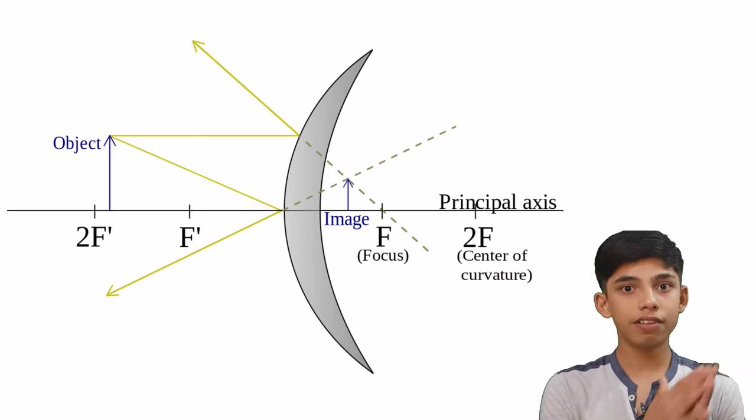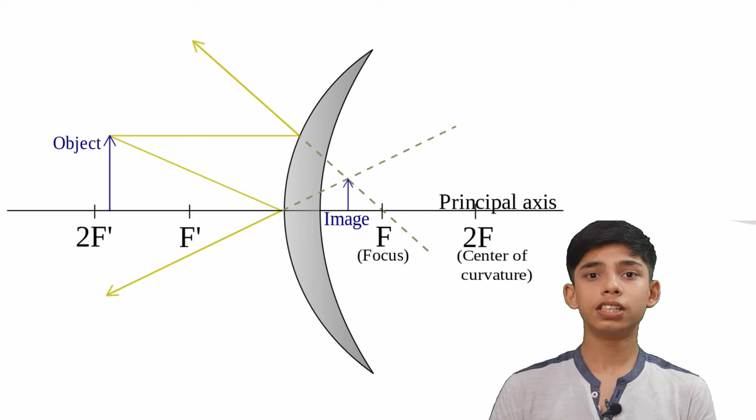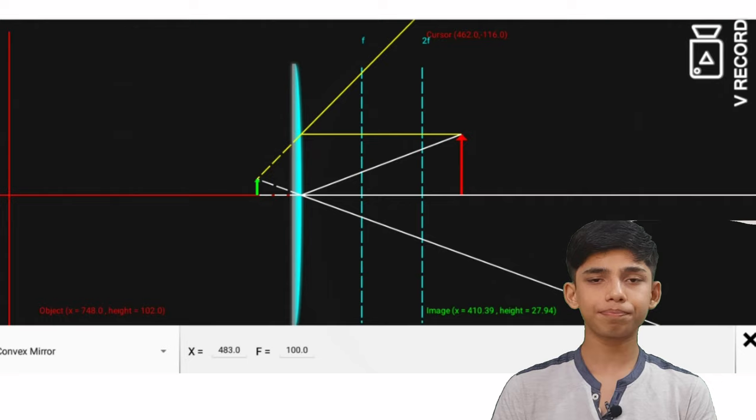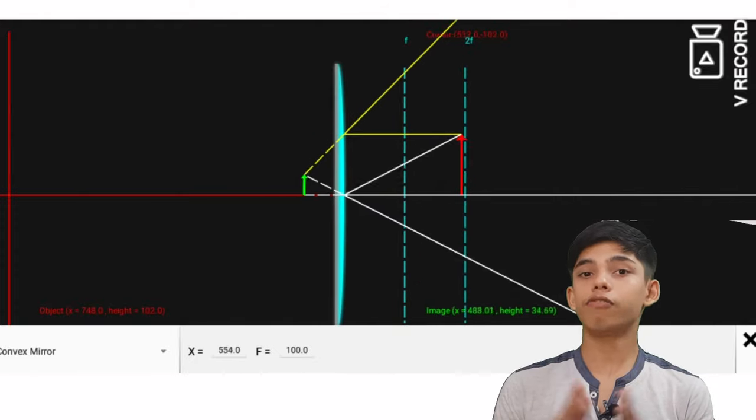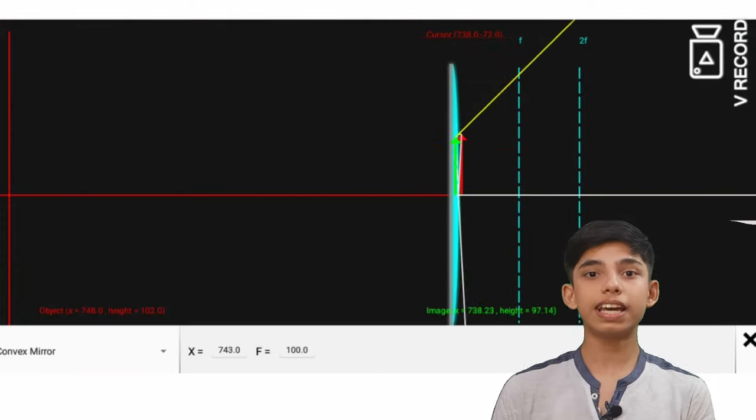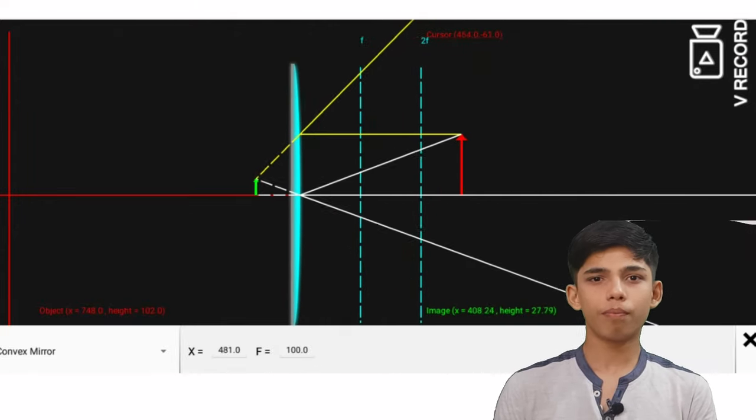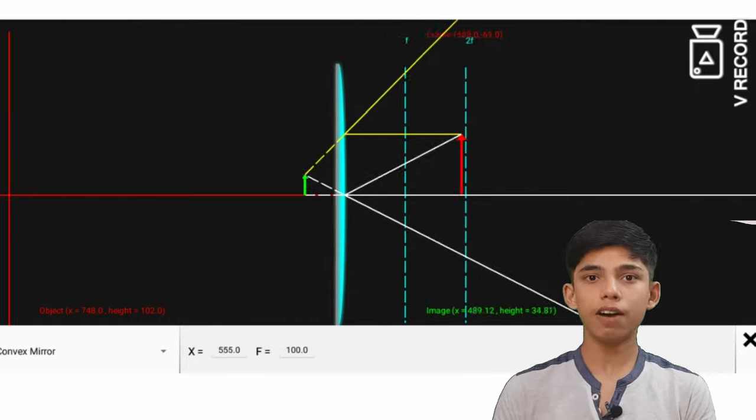So that was the first thing which we can observe. Now there are few more things that focus is on the right side of the mirror. And also that convex mirror always forms a virtual, diminished and erect image. You can see here, right? So these were the things we can observe.